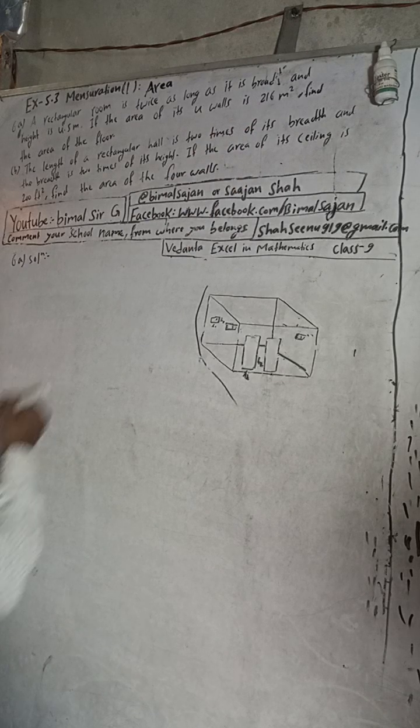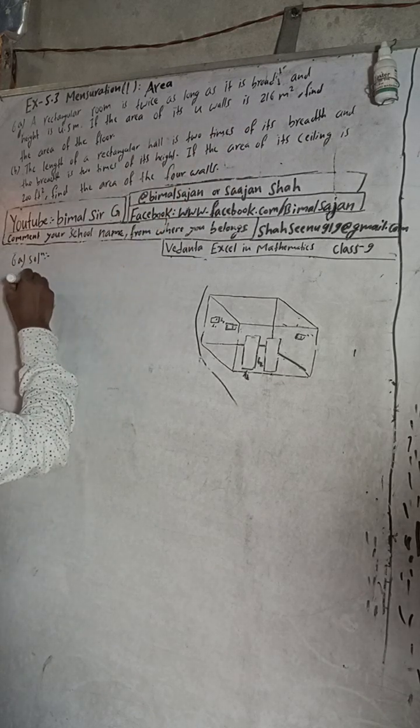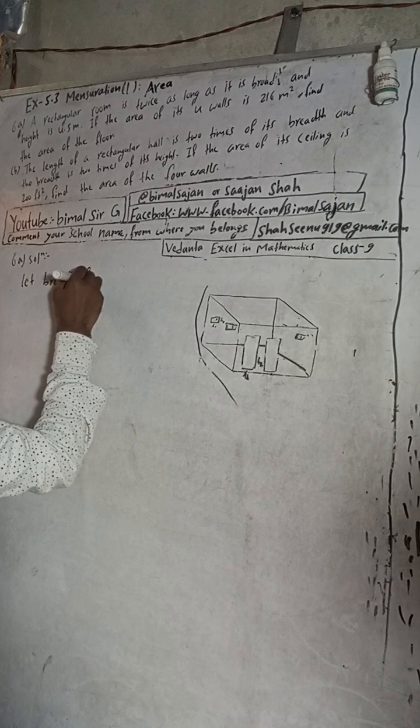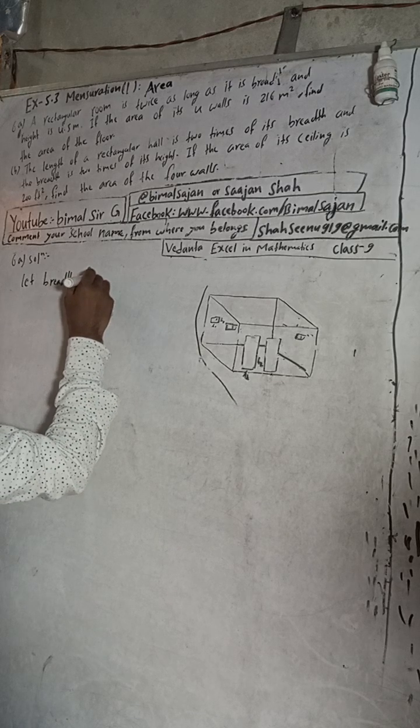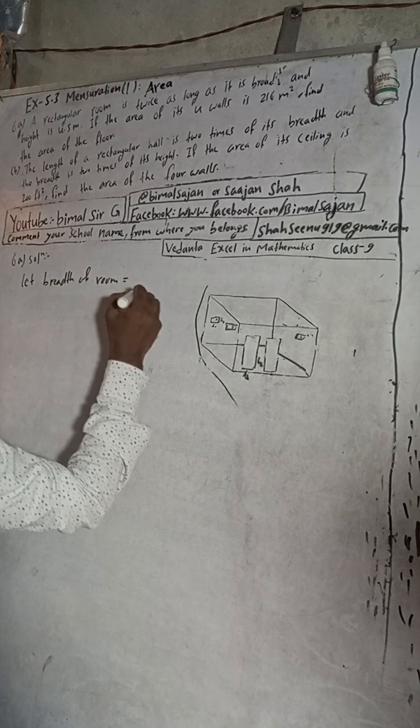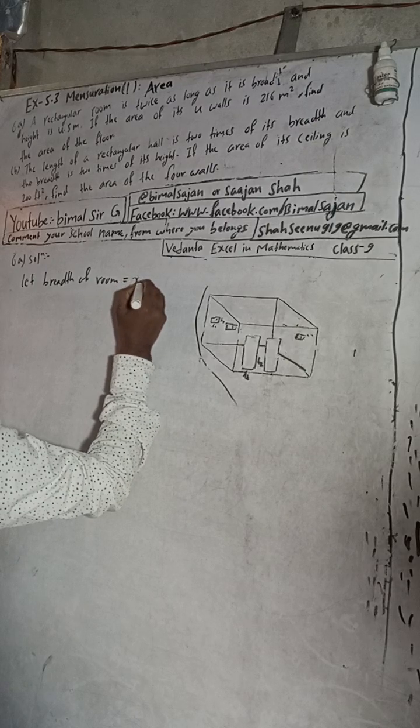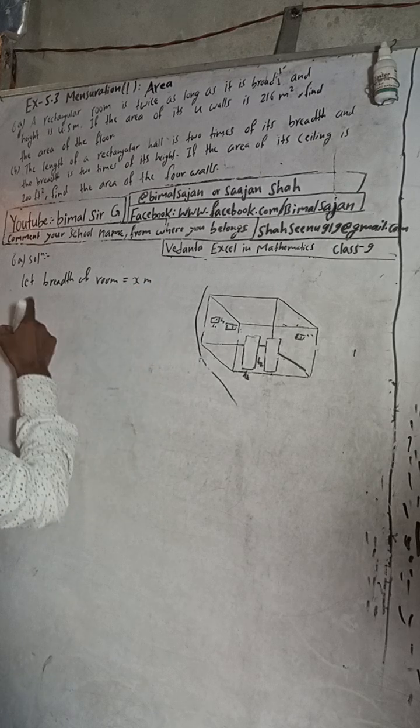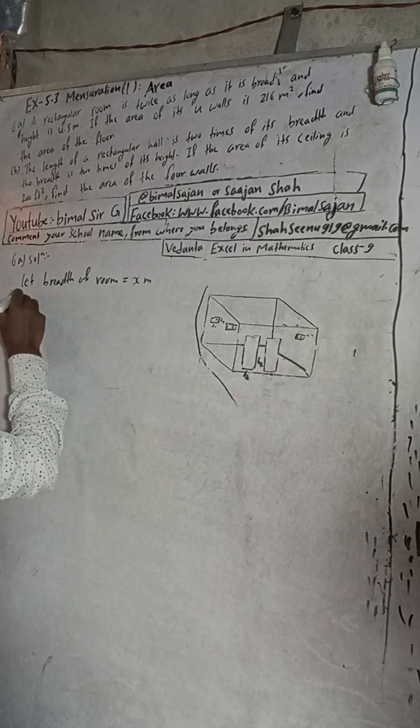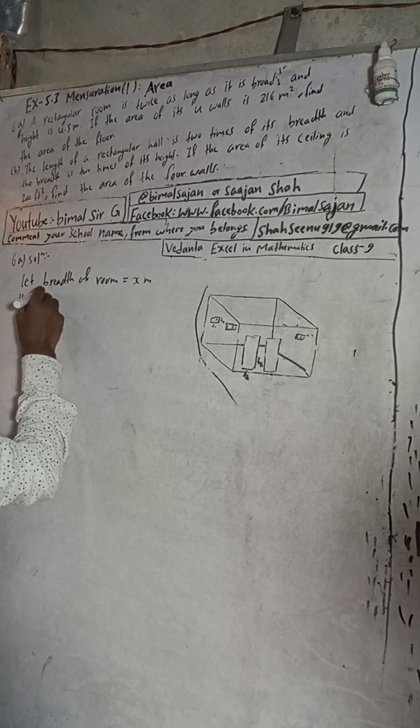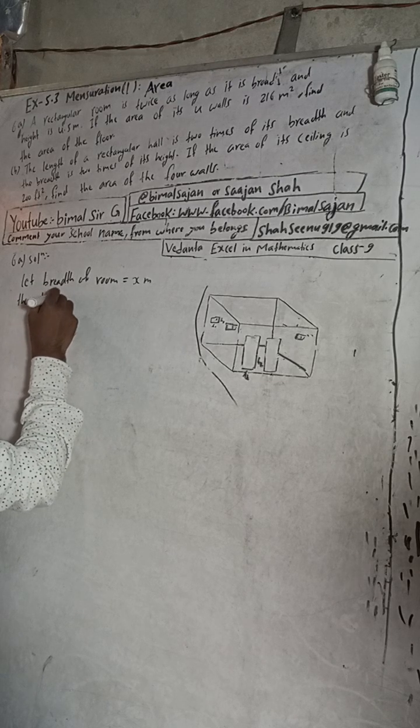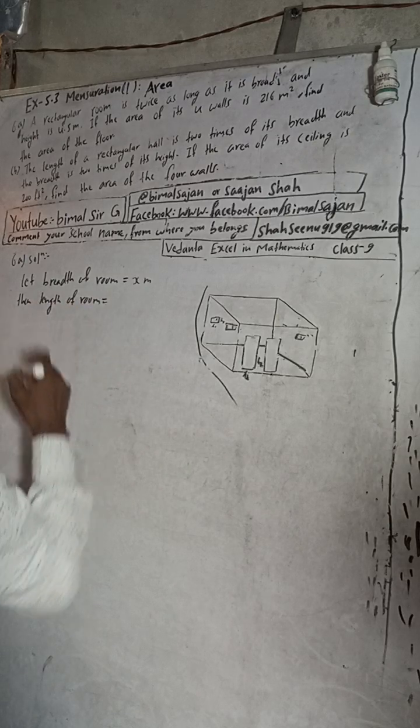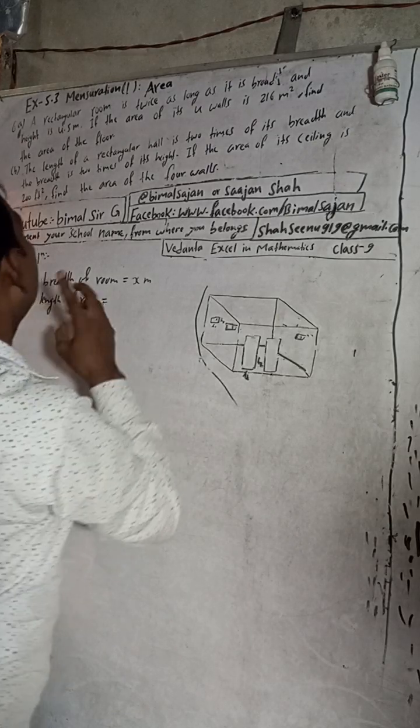Now, the rectangular room is twice as long as it is broad. So let the breadth of the room be x meters.